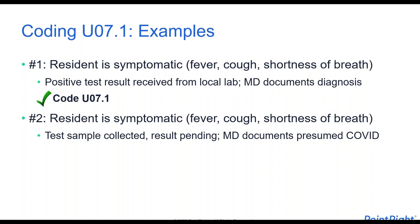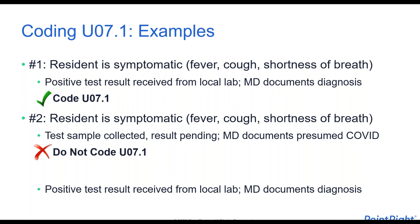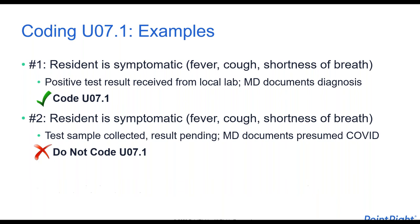For the second example, a resident is also symptomatic with fever, cough, and shortness of breath. A test sample was collected, but we're still waiting for the results. The physician says we're presuming a COVID infection but don't have the results yet. You cannot code for a presumed infection, so you would not code U07.1 in this case because it's not a confirmed diagnosis.